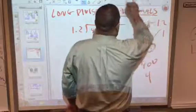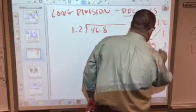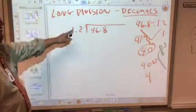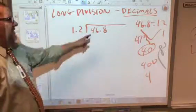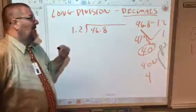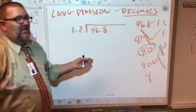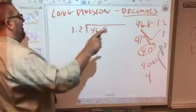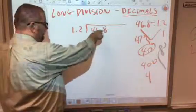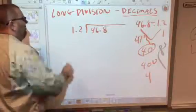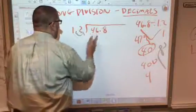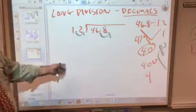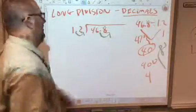So once we get our estimate, then we will make our divisor a whole number. Your dividend doesn't necessarily have to be a whole number, okay? But the most important part, the divisor, what we're dividing by, has to be a whole number. So what we're doing here is moving this over 1, and whatever we do here, we have to do here. So I'm going to move your dividend over 1.